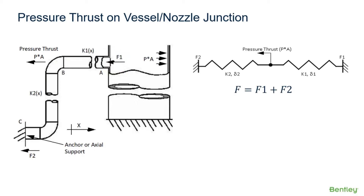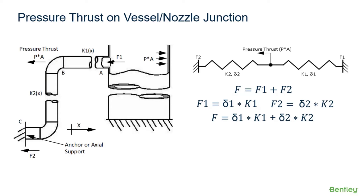The force F is in equilibrium with the two spring forces, F1 and F2. The spring forces are dependent on the spring stiffness and displacement, and we can add them together to get the total force. Since displacement 1 and displacement 2 will be equal, we can denote it by a single variable and solve for F. And if we solve for delta, we can get this equation.